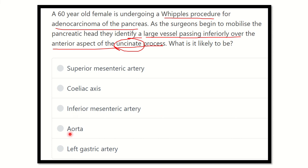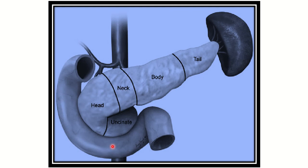The different options are: superior mesenteric artery, celiac axis, inferior mesenteric artery, aorta, and left gastric artery. We have to find out which one of these options is compatible with the answer to this question.